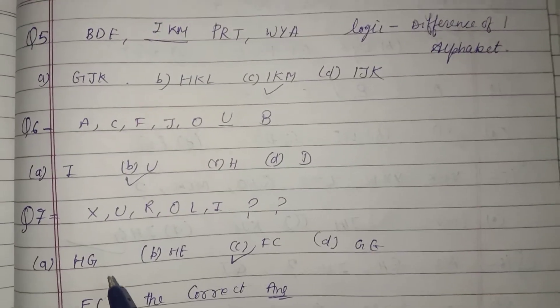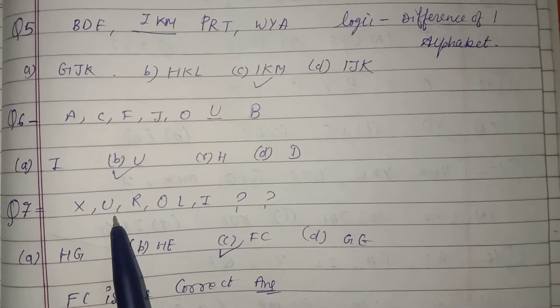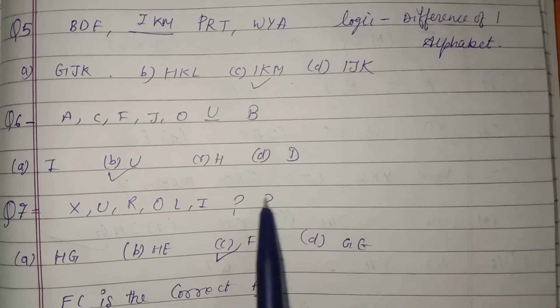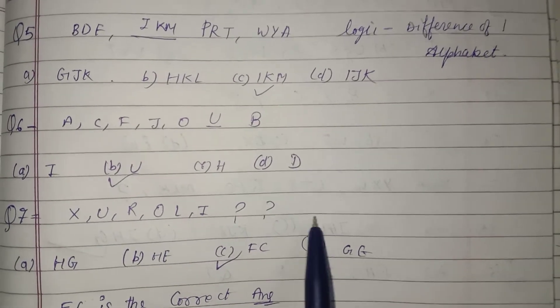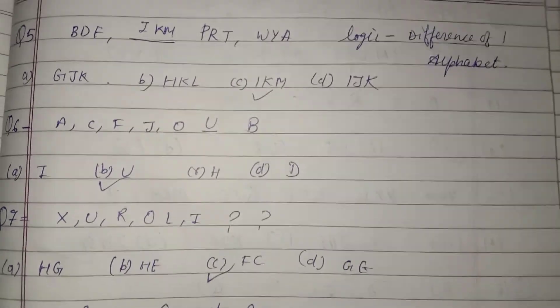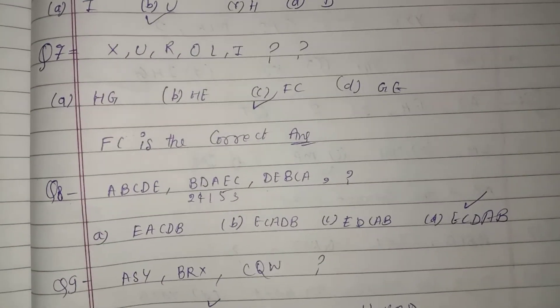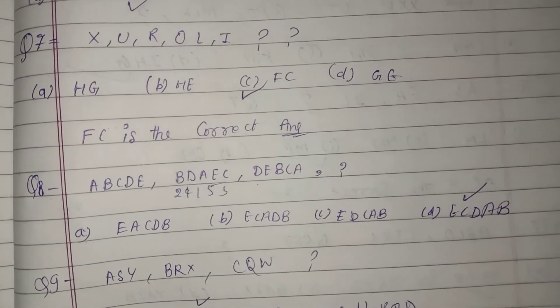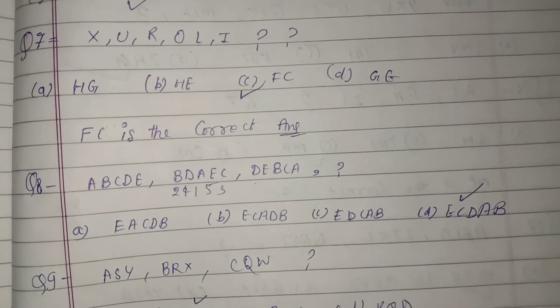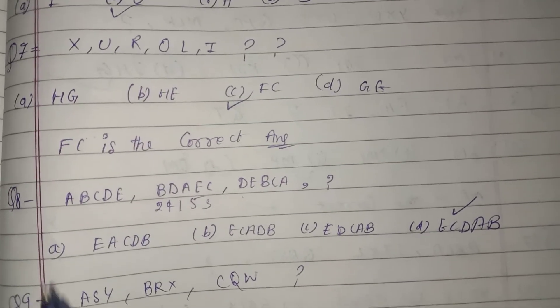Question number 7: X, U, R, O, L, I and two question marks. I will show you the logic and the answer.